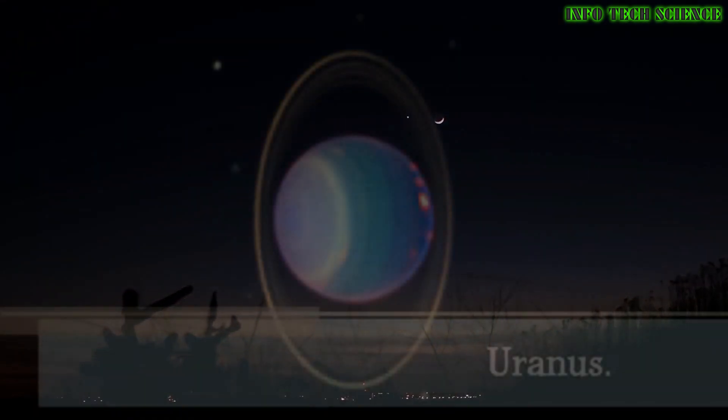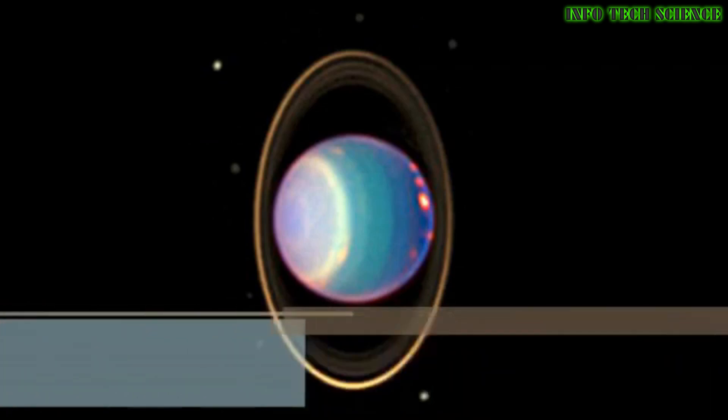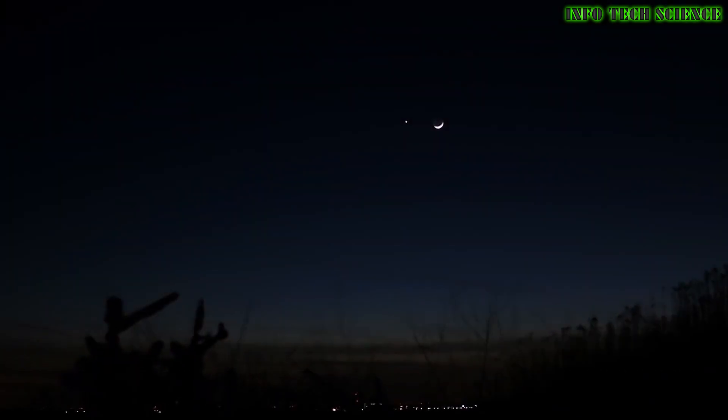It takes Venus 243 Earth days to rotate fully, but only 225 Earth days to orbit the Sun. So if you lived on Venus, your days would be longer than your years and the Sun would rise in the west.